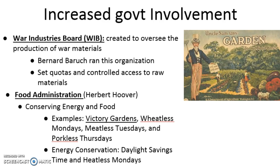Businesses were initially hesitant to meet what Congress was asking them to meet in terms of quotas for building tanks, bombs, and other supplies. That led the United States government and Congress to create the War Industries Board, run by Bernard Baruch. He oversaw and set quotas and controlled access of raw materials to different companies, like Ford, who were asked to produce tanks. Ford was initially hesitant to produce tanks because they didn't want to reduce their own domestic production of Ford cars. However, through the War Industries Board, they were going to be slapped with fines and severely painted as unpatriotic if they did not meet those quotas.